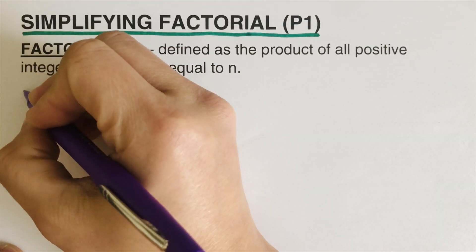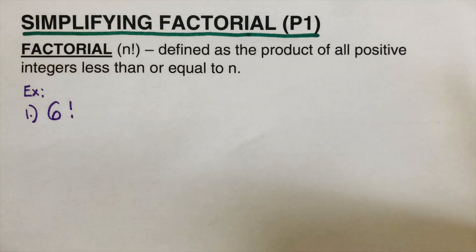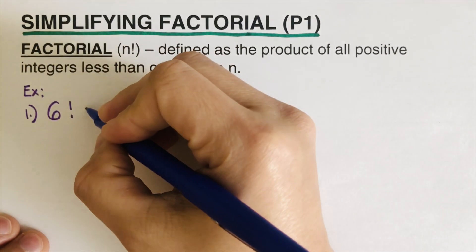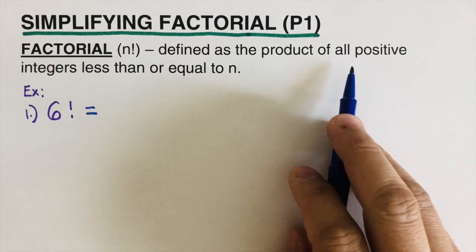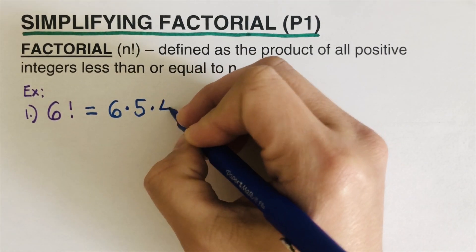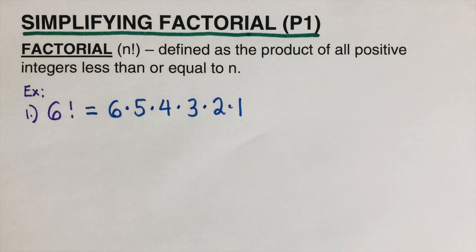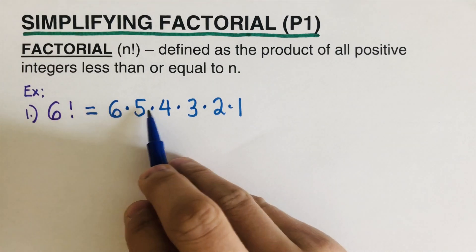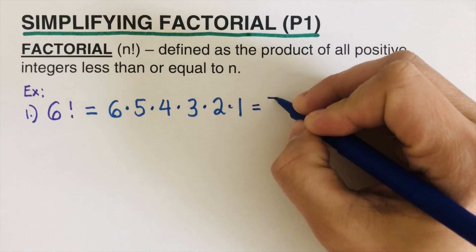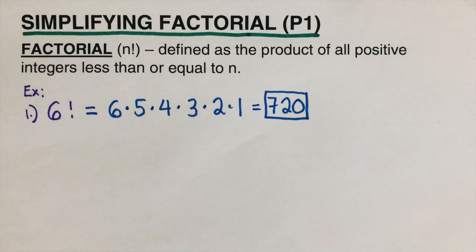Let's take an example: 6 factorial. When we simplify a factorial, it is the product of all positive integers less than or equal to n, which here is 6. So we write 6 times 5 times 4 times 3 times 2 times 1, and multiplying all of these gives us 720. So 6 factorial equals 720.